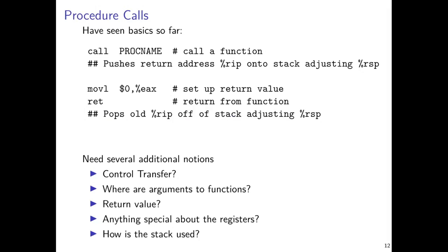Just to briefly review — we picked up discussion before spring break trying to resolve the central issue associated with procedures and returns from them. We had learned earlier that the RIP instruction pointer is responsible for what instruction is going to be executed next in assembly. It's a special register you don't interact with directly, but it's always there moving in the background. As an instruction completes, it will automatically adjust in the processor to the next instruction to execute.